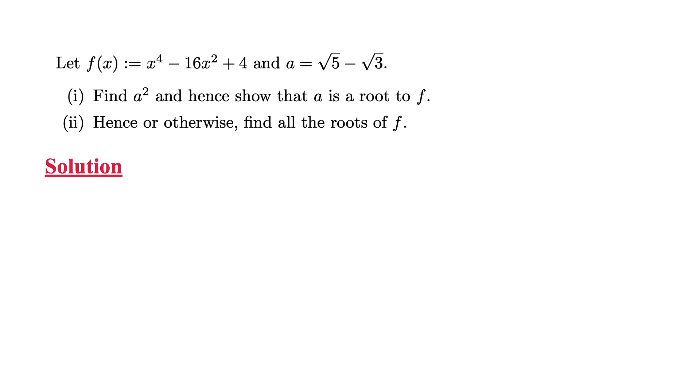The first part is straightforward. We are given a, so we can just use the algebraic identity of a squared plus 2ab plus b squared to find out a squared to be 8 minus 2 square root 15.